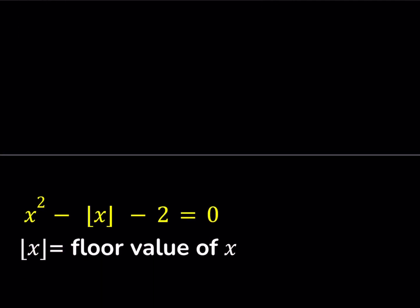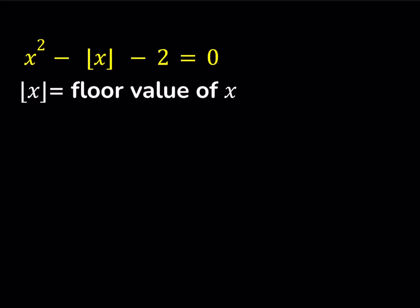So let's get started. Today we're going to be looking at a floor value equation: x squared minus floor of x minus 2 equals 0. The floor value of x is defined as the greatest integer that is less than or equal to x. For example, the floor value of 5 is 5 itself. For a non-integer like 4.3, it's 4. For a negative number like negative 4.3, the floor value would be negative 5, because you always round down.